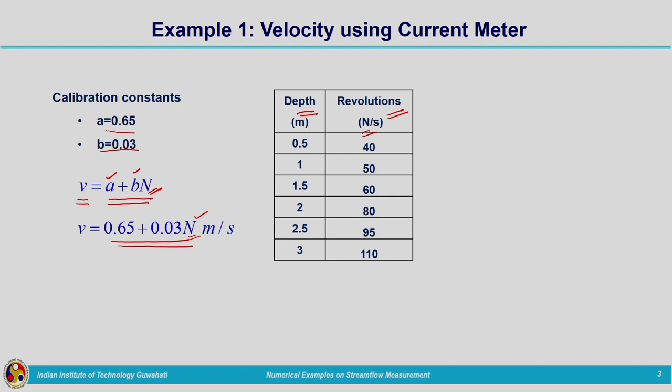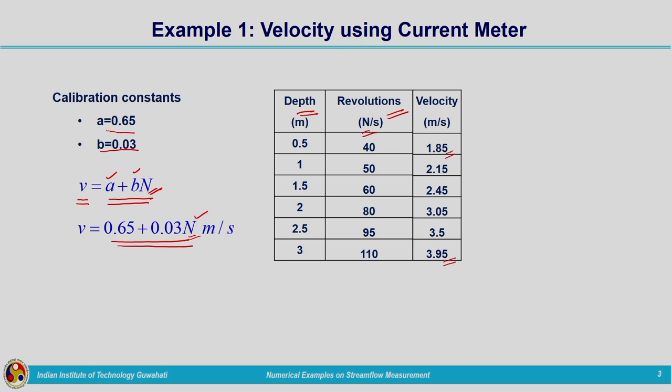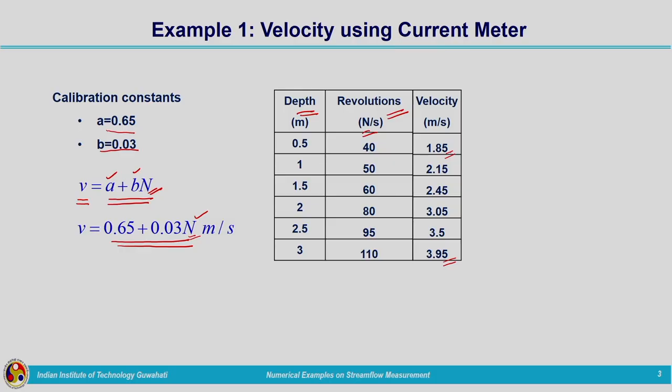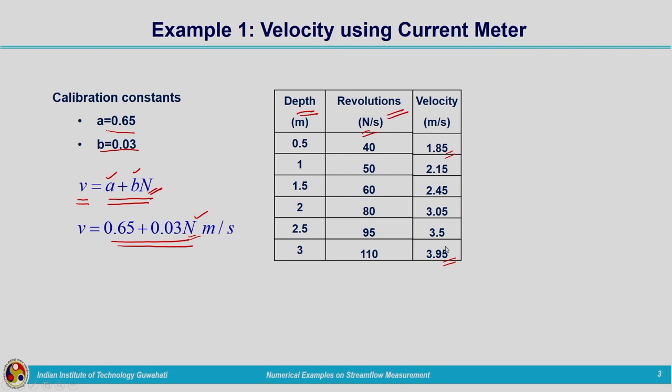After substituting the values corresponding to these revolutions into the velocity equation, we can compute velocities corresponding to different depths. Velocity corresponding to 0.5 meters depth comes out to be 1.85 meters per second. We have calculated for all depths up to 3 meters; at 3 meters it was calculated as 3.95 meters per second. Once velocity is known, if the cross-sectional area is also given, we can compute the discharge at that particular gauging station.